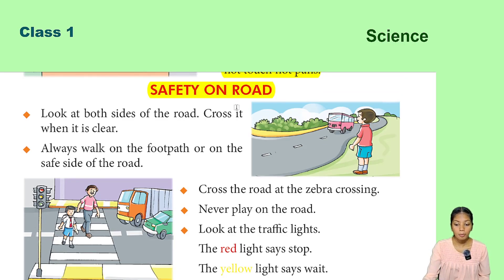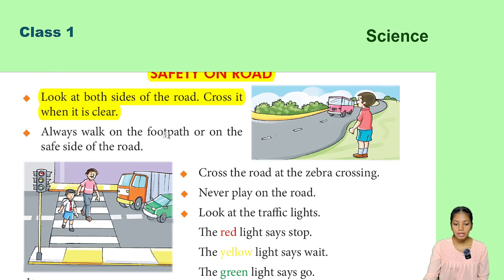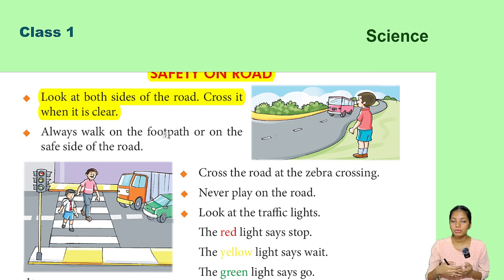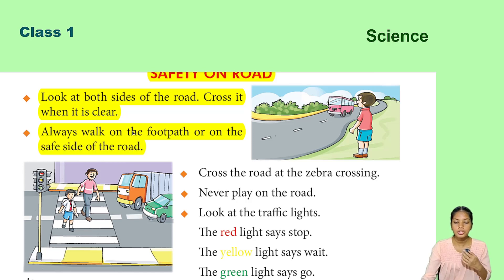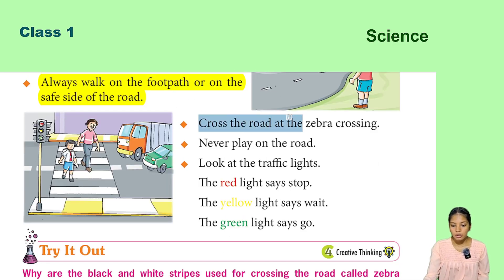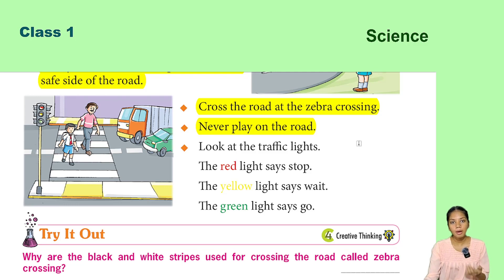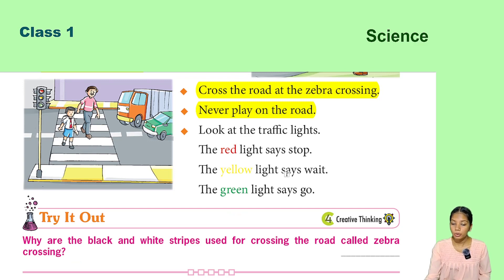Safety on road. Look at both sides of the road and cross it when it is clear. Always walk on the footpath or on the safe side of the road. Cross the road at the zebra crossing and never play on the road.